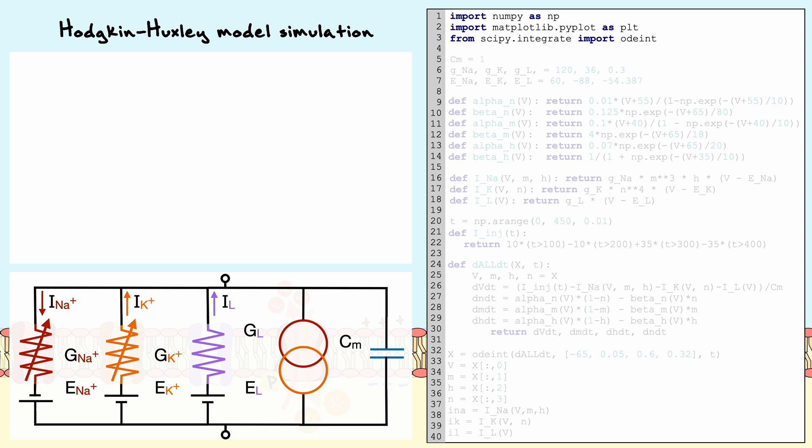First, we need to establish some constants in our system. The constants in our system are the capacitance, the maximal open conductance for sodium and potassium, and the equilibrium potentials for potassium, sodium, and the leak channels. The values are shown both in the code and on the circuit.